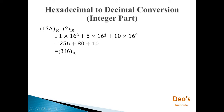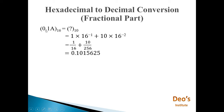For the integer part, we multiply by 16 raised to the power of the position of the number. For the fractional part, after the decimal point we multiply by 16 raised to minus 1, minus 2, minus 3, and so on. So 1 multiplied by 16 raised to minus 1, plus 10 multiplied by 16 raised to minus 2 gives the value 0.101562 5.